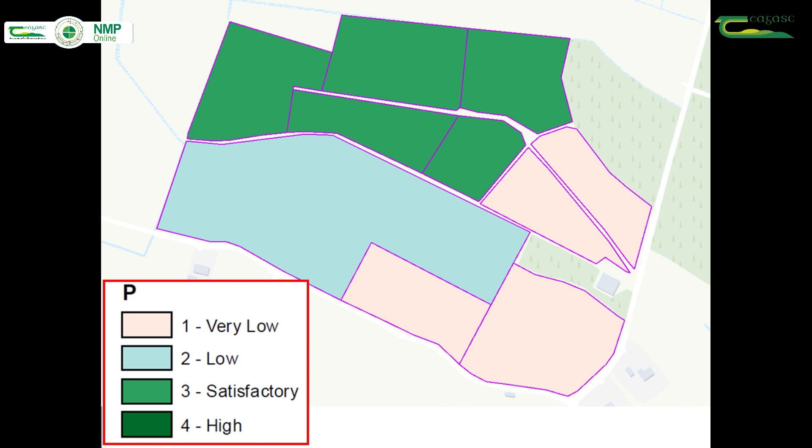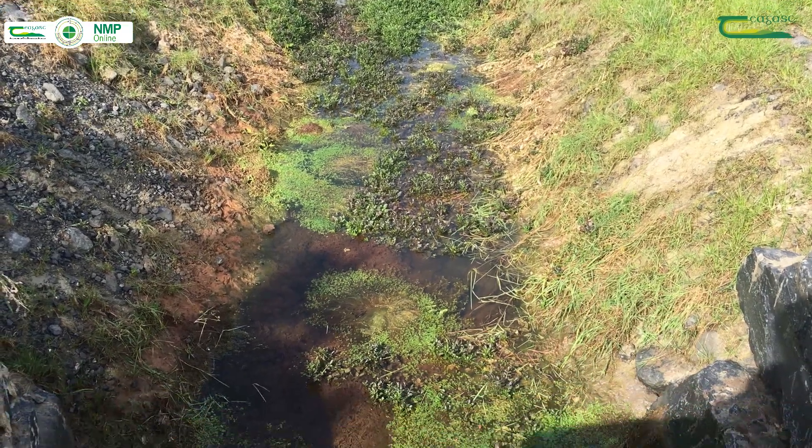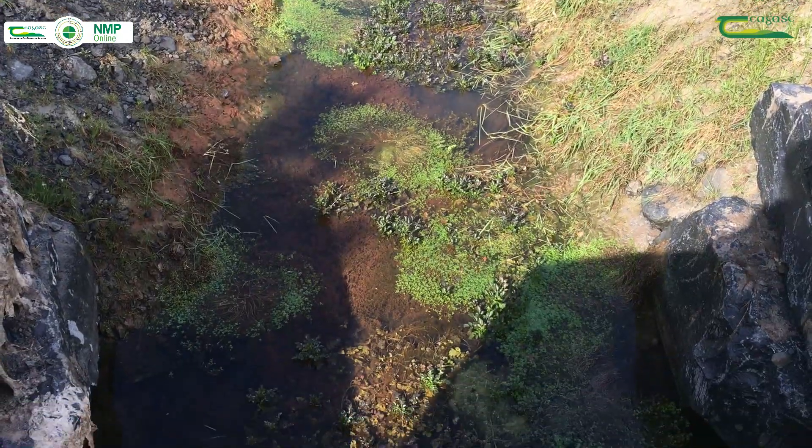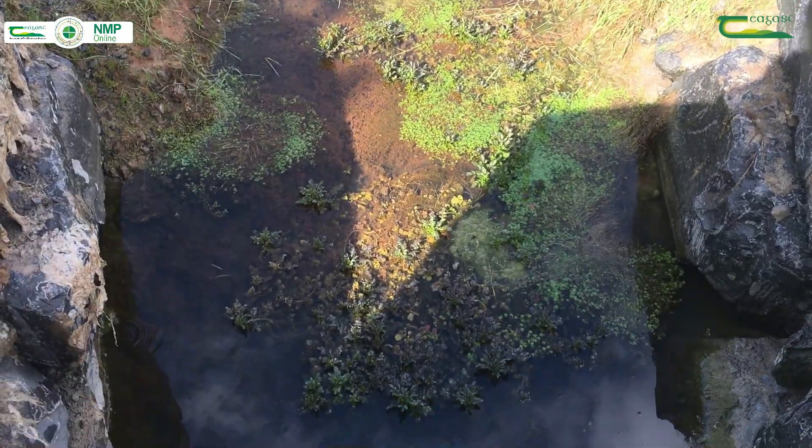For optimum levels, index 3 is the target, as index 4 can often lead to P loss causing water quality issues.